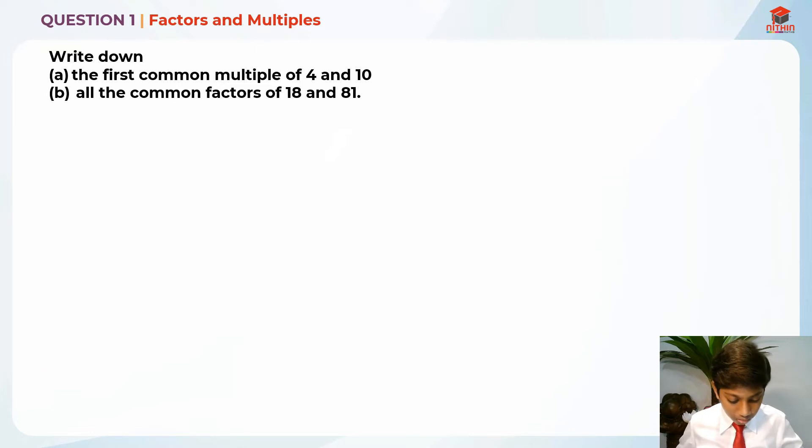They are asking us to write down the first, the number 1, common multiple between 4 and 10. So in order to do this, we need to list down the multiples of 4 and 10. Let's list down the multiples of 4 first.